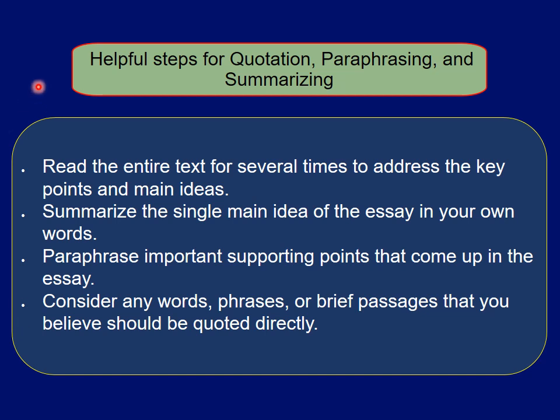What should you do to cite a work from a reference in a scientific way? The helpful steps for quotation, paraphrasing, and summarizing are: first, read the entire text several times to address the key points and main ideas; second, summarize the single main idea of the essay in your own words; third, paraphrase the important supporting points that come up in the essay; and lastly, consider any words, phrases, or brief passages that you believe should be quoted directly.